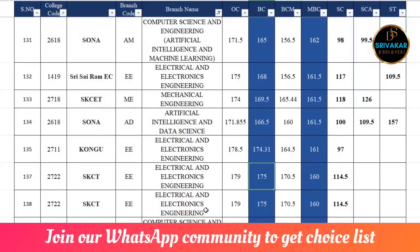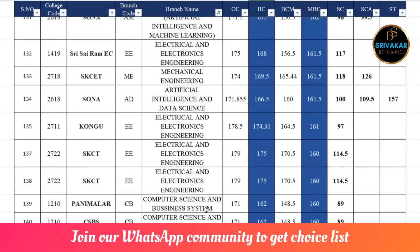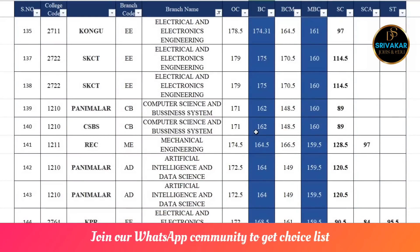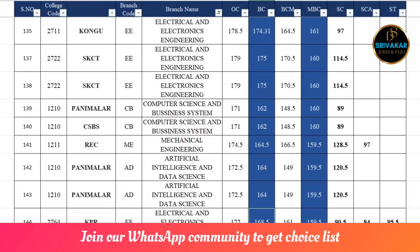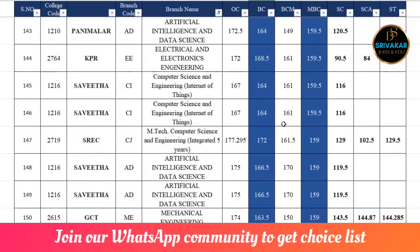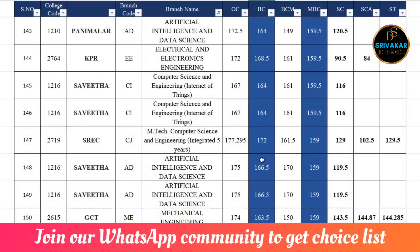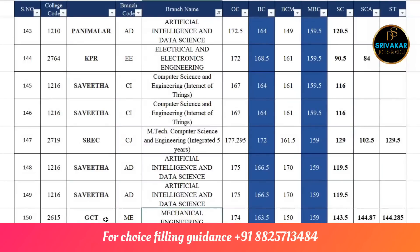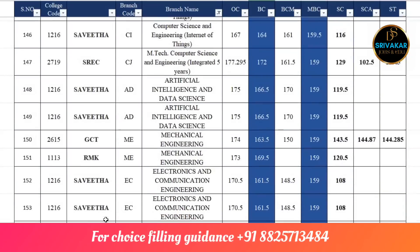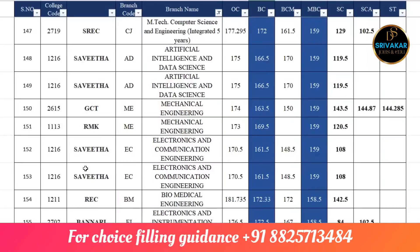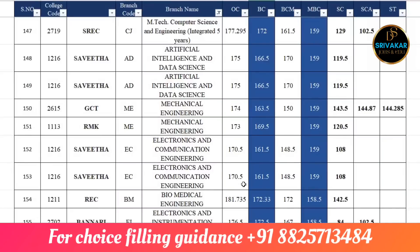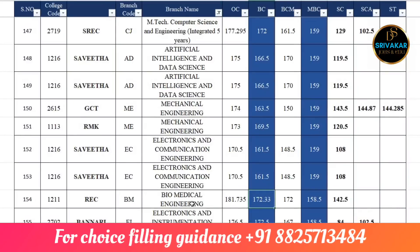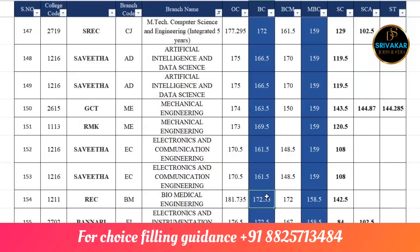SKCT is 175. Panimalar CSBS is 162. REC Mechanical is 164.5 BC. Panimalar AADS is 164. KPR EEE is 168.5. Savitha IoT is 164. Ramakrishna Mtech is 172. Savitha AADS is 166.5. GCT Mechanical is 163.5. RMK Mechanical is 169.5. Savitha AADS is 161.5.